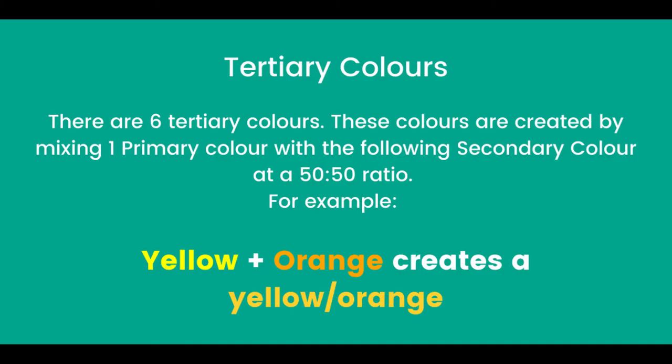There are six tertiary colours. These colours are created by mixing one primary colour with the following secondary colour at a 50-50 ratio. For example, yellow and orange creates a yellowy orange.